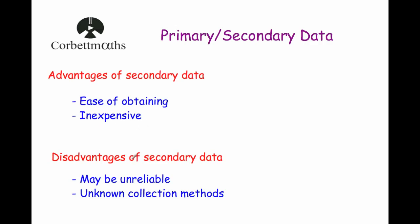The disadvantages of using secondary data: the big one is it may be unreliable. Particularly if it's online, it may be made up, or leading questions may have been used to collect the information — so there are different reasons why it may be unreliable. Also, you don't know which collection methods were used, so you don't know if it was fair or who was included within the sample.